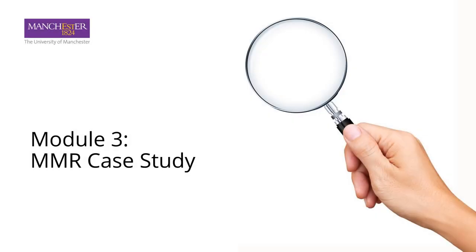Welcome to Module 3. In this module we will look at some published studies together and learn about the things that can help us recognise studies that provide us with robust evidence from those that might provide interesting hypotheses but don't provide reliable proof. We will practice appraising the quality of a published study and test the MMR causing autism hypothesis against the Bradford Hill criteria for causality that we learned about in Module 2.